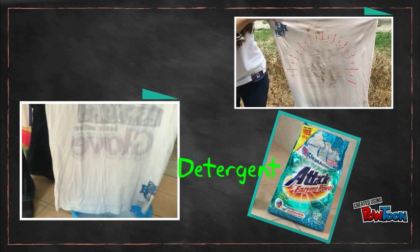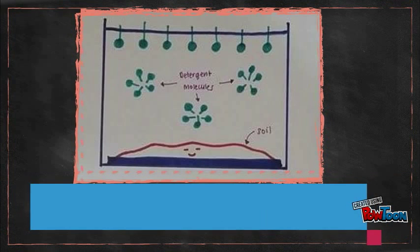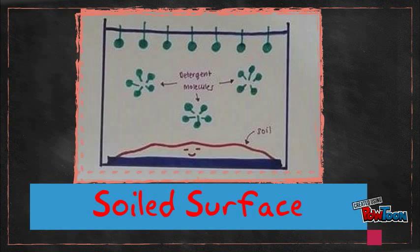Have you ever wondered why detergent is able to remove soil from coats instead of soap? This is due to its main characteristic where its molecular structure consists of a hydrophobic and a hydrophilic end.